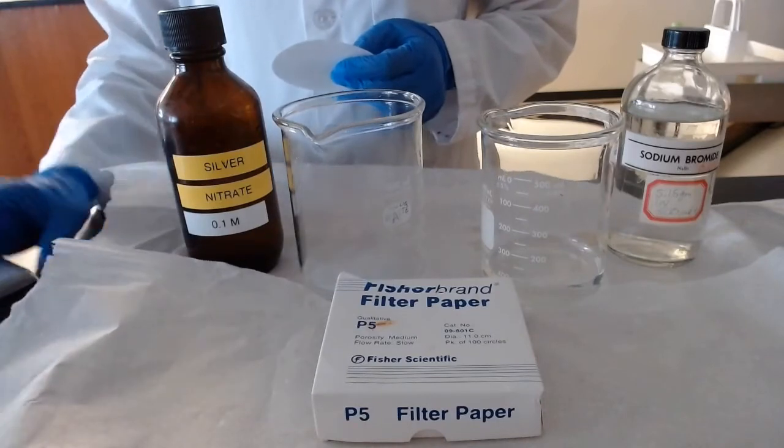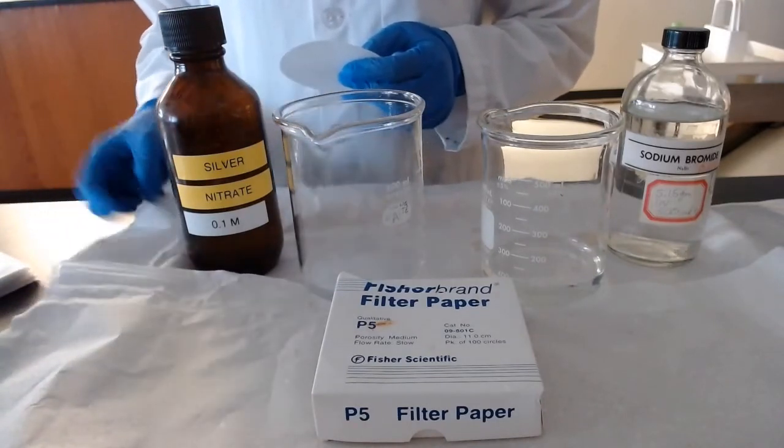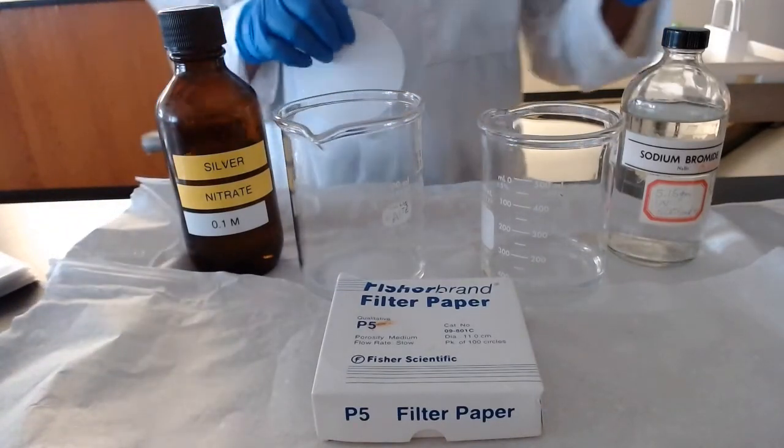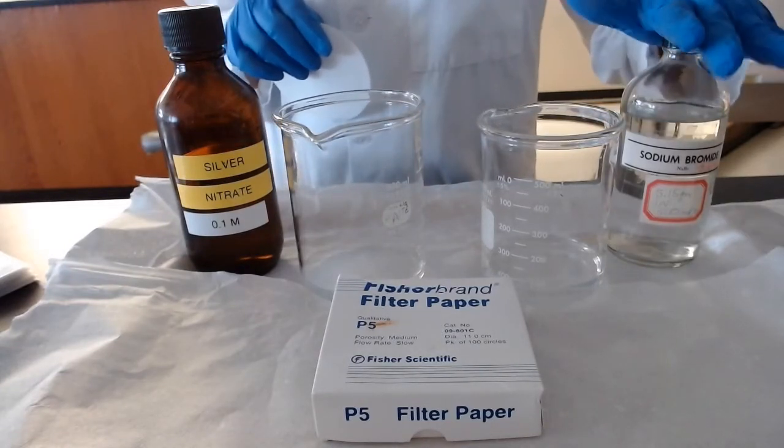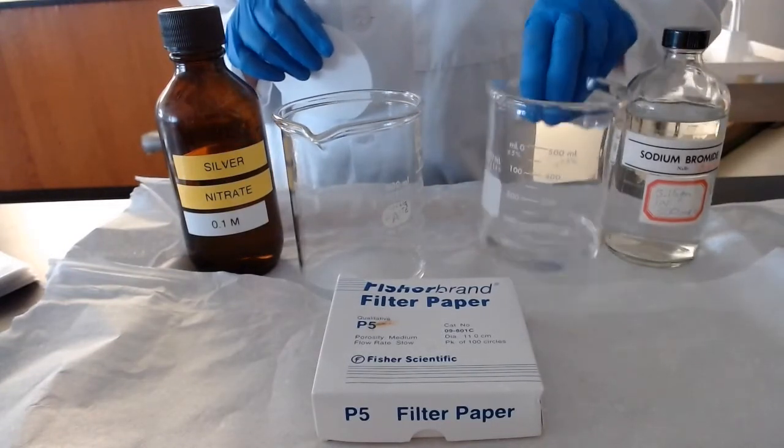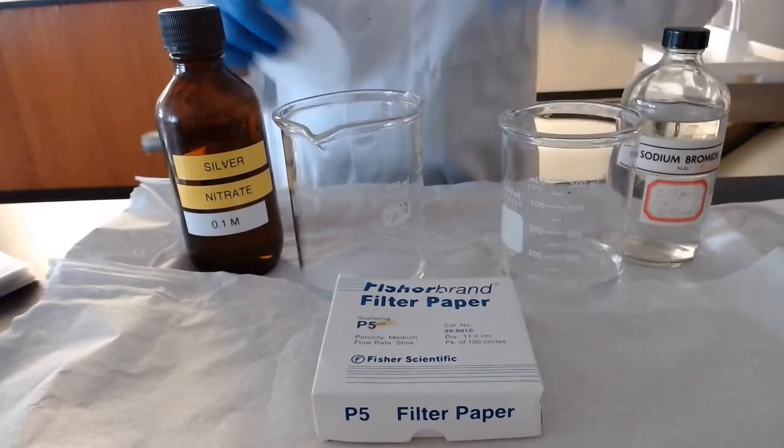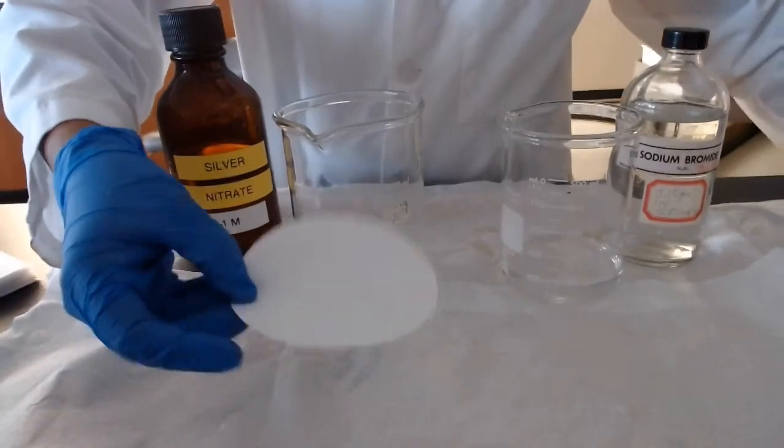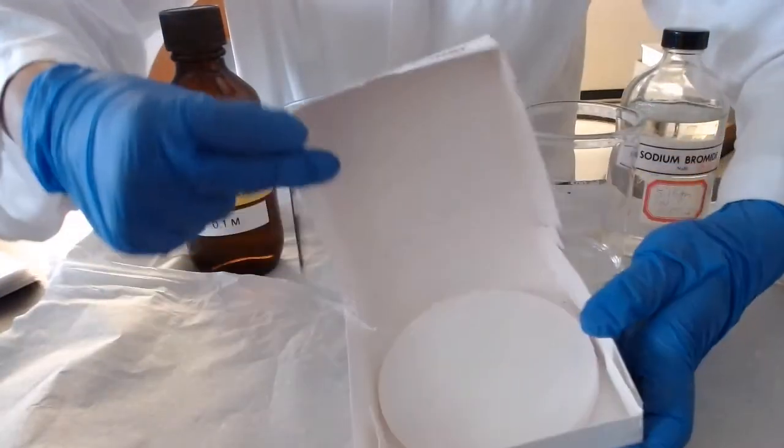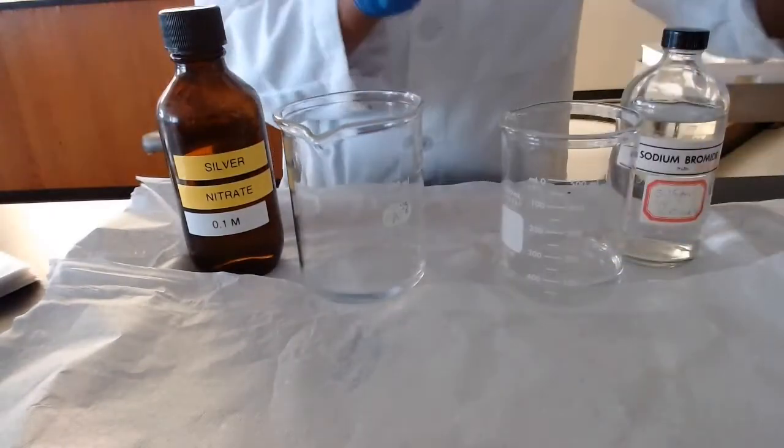The first thing we need to do is place a large filter paper inside a dish filled with 0.1 molar sodium bromide. This is the sodium bromide I have already in the beaker. This is the filter paper. It looks like this. So we have filter paper, and I will place it first in here.